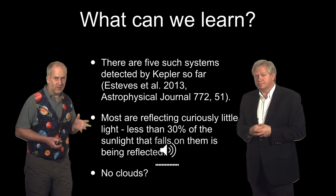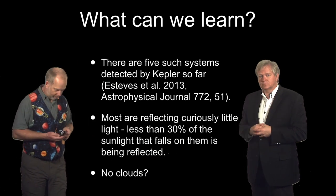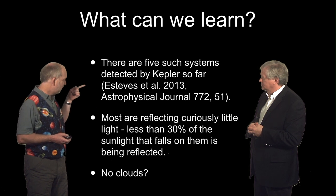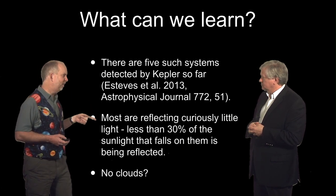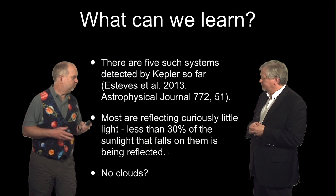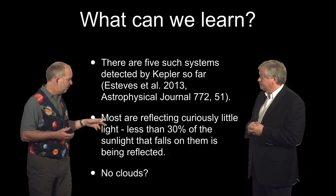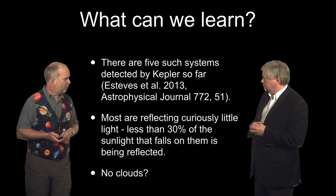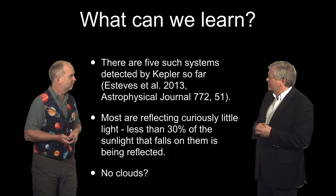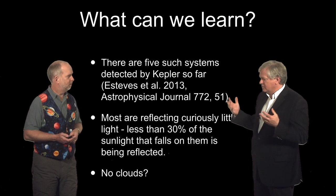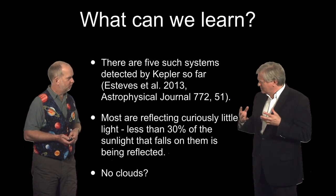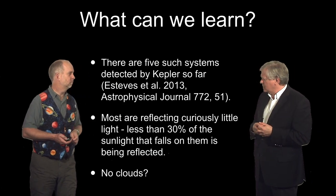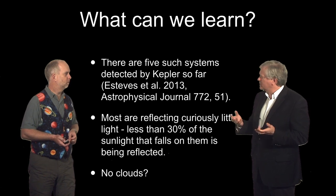There have been five of these things seen now by Kepler, and this number will go up fast. Most are reflecting curiously little light. Most planets actually reflect quite a bit of the light that bounces off them, but these ones — it's less than 30% — so they're actually quite dark, which is a bit weird. So we have five systems. They are very interesting, but the fact that they are curious, not reflecting much light makes them — well, the question is: is that what we expect?